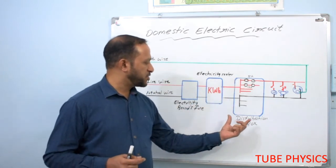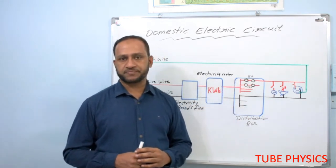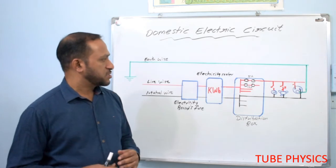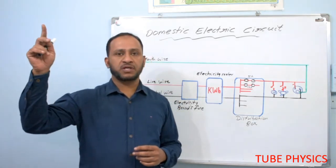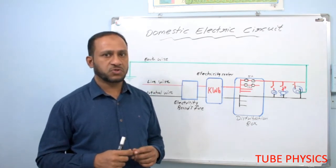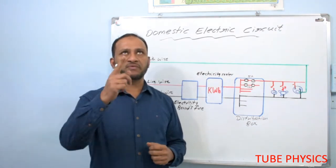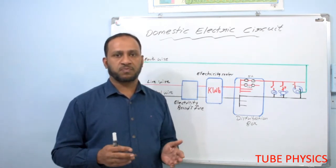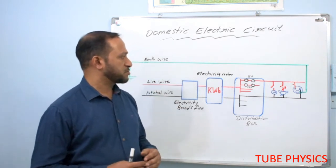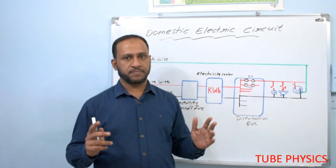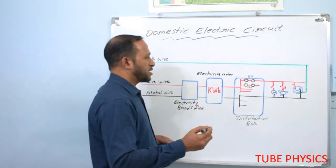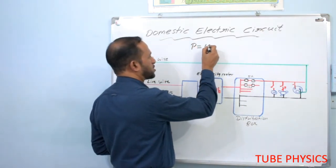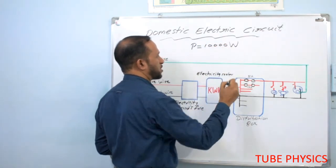How many branches are needed? In the main distribution box, we have to do some calculation. For example, in this building, suppose in this room I have 3 bulbs of 18 watts — total power 18 into 3 — plus 1 fan of 60 watts, plus 1 AC of 2000 watts. Like that, you keep on adding the total power of all other devices in your building. Suppose when I added the power of all devices in my building, I am getting a total power of P equal to 10,000 watts.